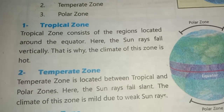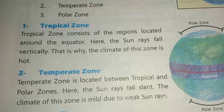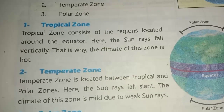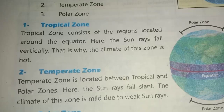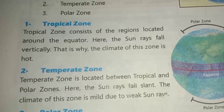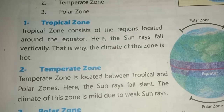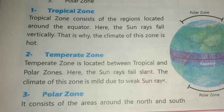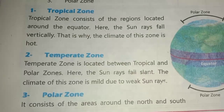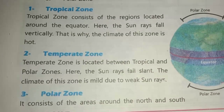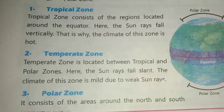The second one: what is temperate zone? Temperate zone is located between the tropical and polar zones. Here the sun rays fall slant, and the climate of this zone is mild due to weak sun rays.